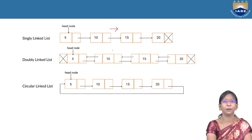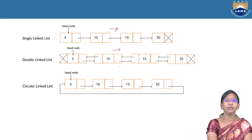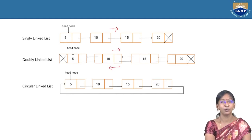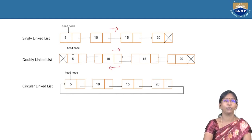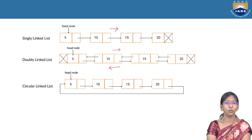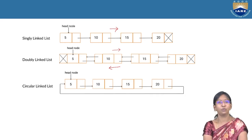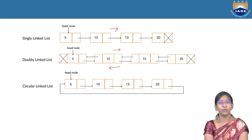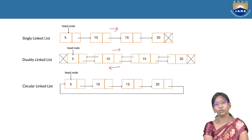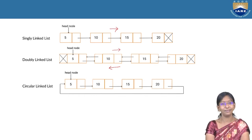In a double-linked list, we can run forward as well as backward. Every node holds the address of its next node and the previous node also. So the double-linked list has the privilege to run in forward as well as reverse direction.